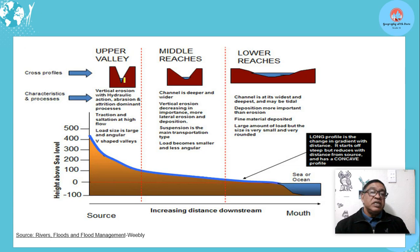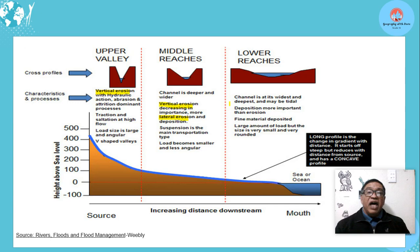Looking at another source on the same thing — upper course: the valley is more V-shaped, with vertical erosion dominating. Middle course: vertical erosion decreases and lateral erosion takes place, therefore it gets wider. And in the lower course, deposition is more than erosion, making it wide. So there is a relationship between the longitudinal and the cross profile.